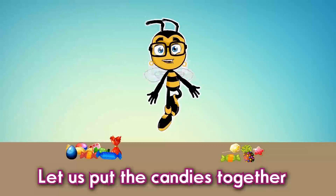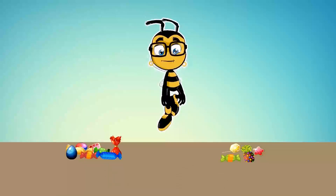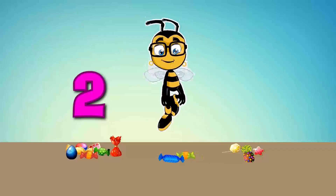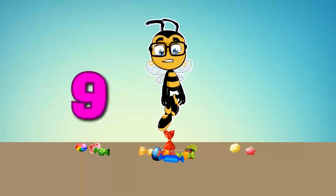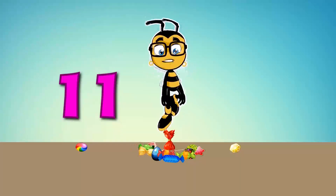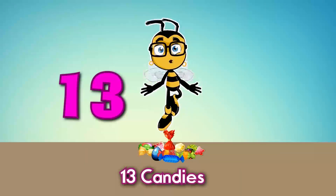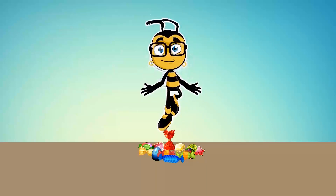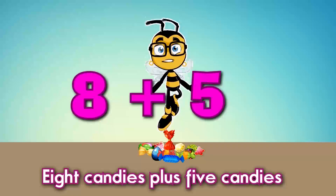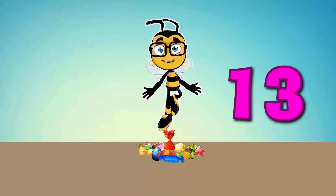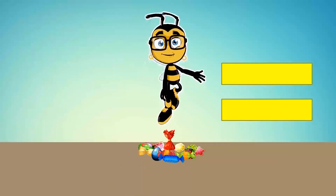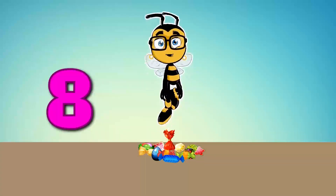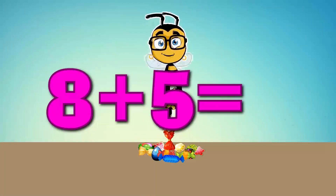Now, let us put the candies together and count them: one, two, three, four, five, six, seven, eight, nine, ten, eleven, twelve, thirteen candies. So, eight candies plus five candies will give us thirteen candies. It is represented by an equal sign. Eight plus five is equal to thirteen.